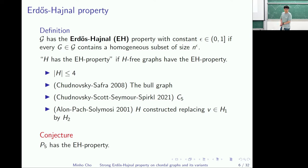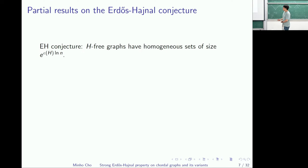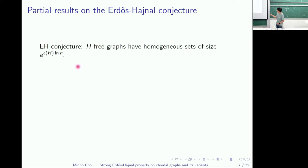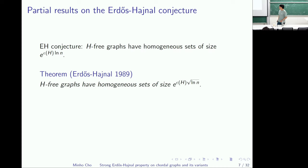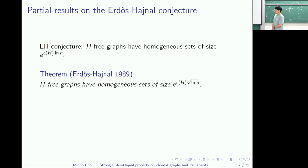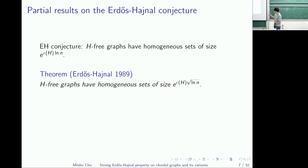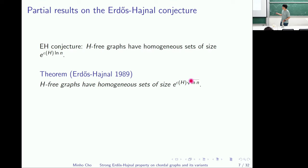The Erdős-Hajnal conjecture is, in general, hard to solve. Taking logarithms, the conjecture has the formulation of exponential of some constant times log n. Erdős-Hajnal themselves proved one can find homogeneous sets of size exponential of square root of log n instead of log n. And earlier this year, there was a breakthrough where four authors managed to add an additional multiplicative term of log log n.